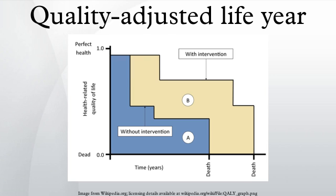Another way of determining the weight associated with a particular health state is to use standard descriptive systems such as the EuroQOL Group EQ-5D questionnaire, which categorizes health states according to the following dimensions: mobility, self-care, usual activities, pain/discomfort, and anxiety/depression.